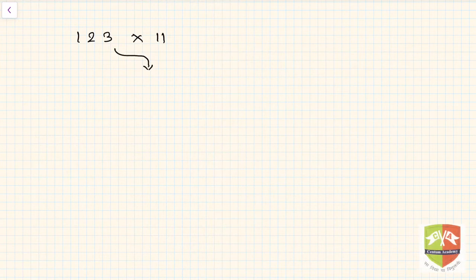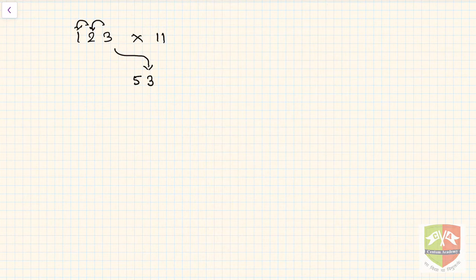Now let us take a three-digit number: 123 multiplied by 11. The same process applies, just with a few more steps. Write 3 first, then add 3 plus 2 to get 5, then add 2 plus 1 to get 3, and finally bring down the leading 1. The answer is 1353. With enough practice you'll be able to do these calculations in your head.